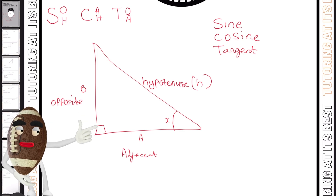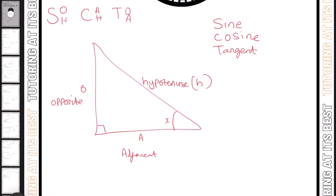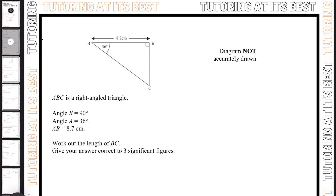Let's go ahead and see how we can apply this, using the same structure as I've written here. Question one: ABC is a right-angled triangle and we need to work out the length of BC. Step one — we're going to label the sides. Starting off with the longest side, which is our hypotenuse. We then have the side opposite to the angle, which is our opposite, and then we have our adjacent.